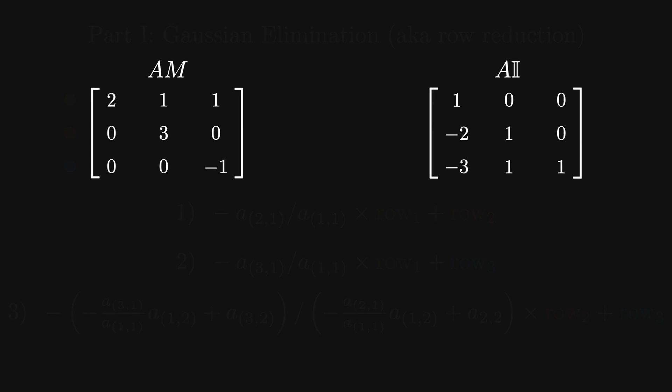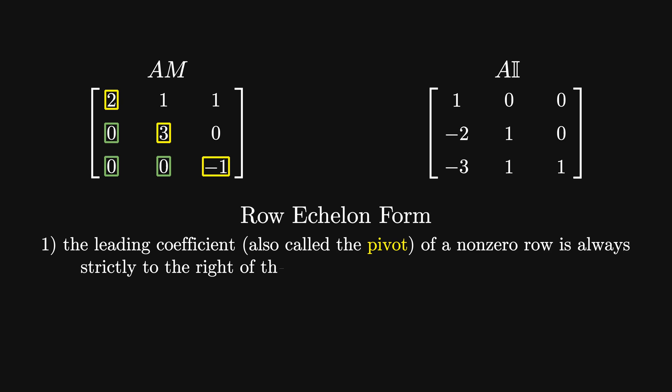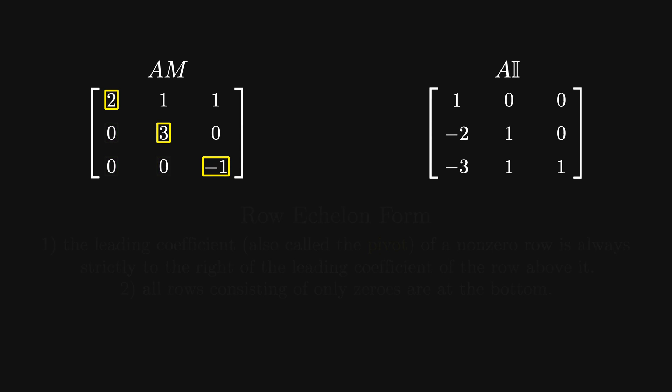We're done with Gaussian elimination when the matrix is in what we call row echelon form. A matrix is in row echelon form: 1) the leading coefficient, called the pivot, of a non-zero row is always strictly to the right of the leading coefficient of the row above it, and 2) all rows containing all zeros are at the bottom. Gaussian elimination can put any matrix into row echelon form. You can prove this as an exercise for yourself.